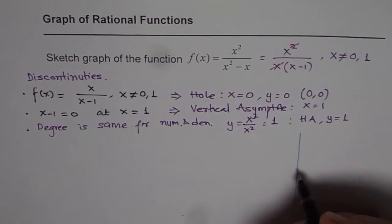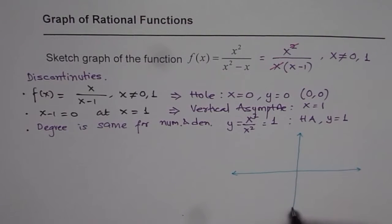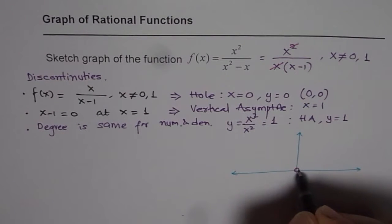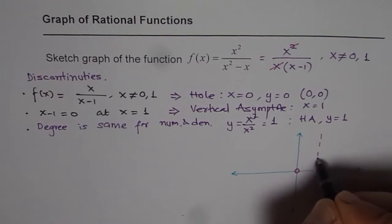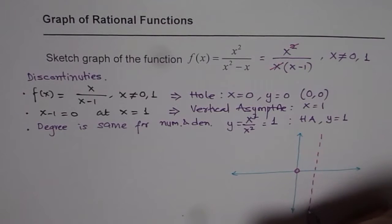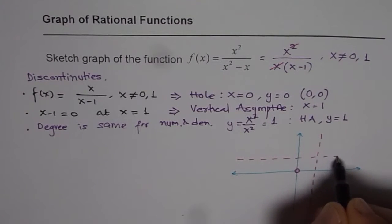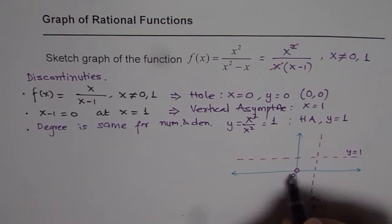Now we'll sketch the basic bare minimum so we understand how the rational function will look. We have a hole at the origin, a vertical asymptote at x = 1, and a horizontal asymptote at y = 1. Let me draw those — the horizontal asymptote y = 1, the vertical asymptote x = 1, and the hole at the origin.